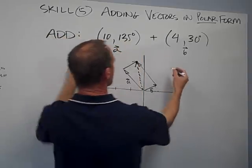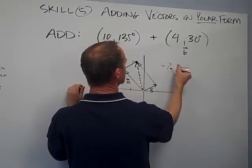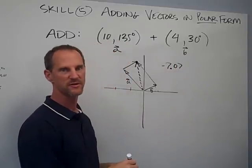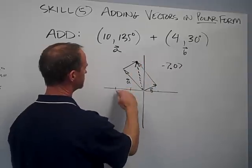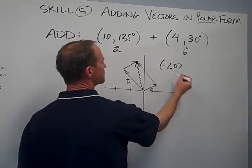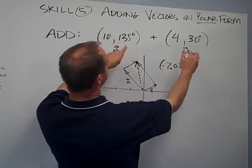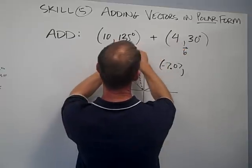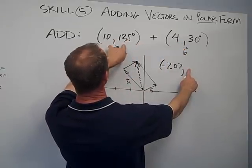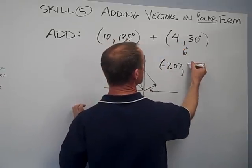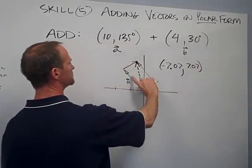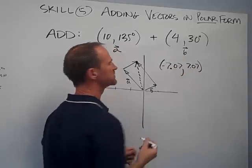That's going to be negative 7.07 — I'm going to two hundredths for a little more accuracy. Sometimes when you get around an axis, you want that extra degree of accuracy to be precise. The second component is the sine of 135 times 10, and that's going to be 7.07. Because that's 45 degrees beyond 90, those should be equal.